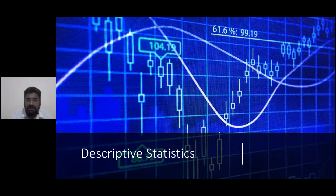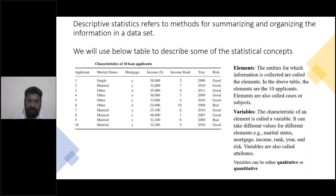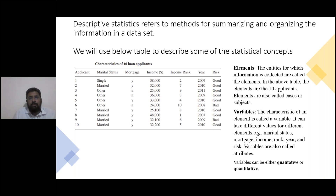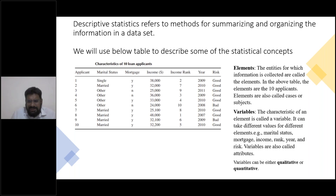The next topic is descriptive statistics. In the next 10 to 12 minutes I'll give you the basics and then we'll go to Excel for practical implementation. Here's an example I'd like you to remember — I'll use it in the future too. This is an example of 10 loan applicants. You can see data of 10 loan applicants — some are married, some are single, some have other statuses. Variables include marital status, whether they have a mortgage (yes or no), their income in dollars, income rank, year, and risk.